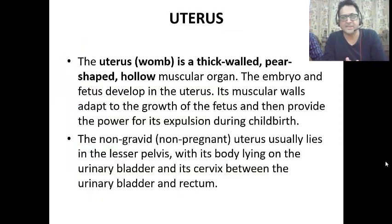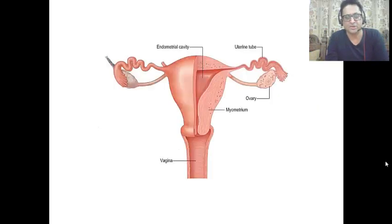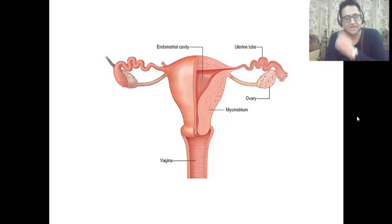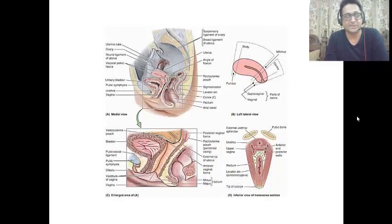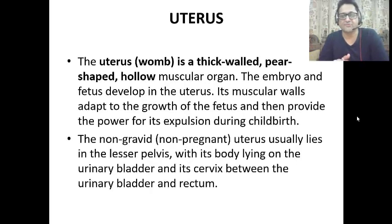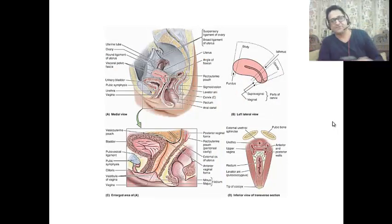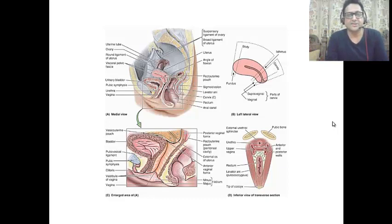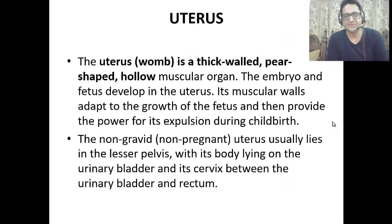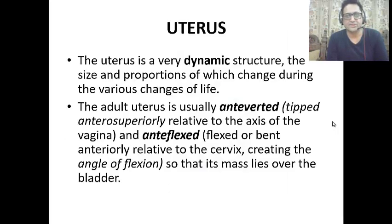Today's topic is the anatomy of the uterus. The uterus is a thick-walled, pear-shaped, hollow muscular organ meant for keeping the embryo and fetus inside to give childbirth. When non-pregnant, it lies in the lesser pelvis. This is a very dynamic structure, and during pregnancy it changes its position and rises above this level, so its size and proportions change during various stages of life.